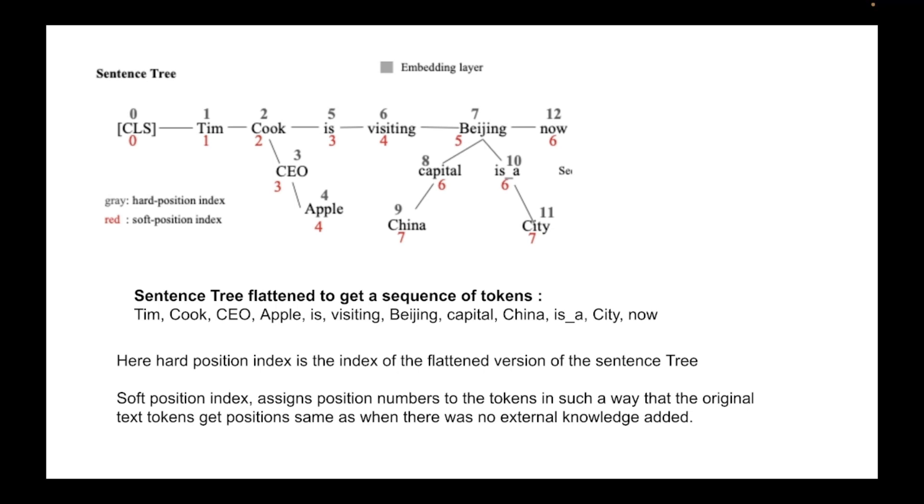Now soft position indices are interesting. Here you are allowed to assign the same position to multiple tokens. The idea is token positions should be assigned keeping the meaning of the text intact. So you start with zero on the left and first traverse the entire text tokens of the original text without any knowledge tokens. So zero, one, two, three, four, five, six, because this was our original text. Now we look at each branch and then look at the previous soft position token and then increment further. So here Tim Cook had two, so we have three and four here. Similarly Beijing had five, so capital and China gets six and seven and so on.